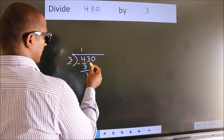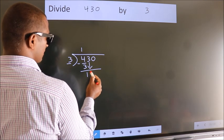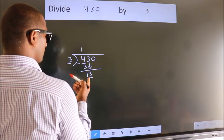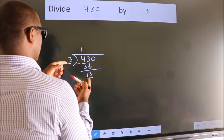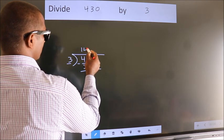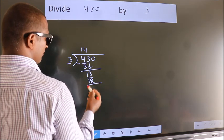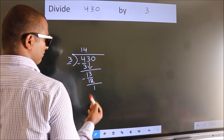After this, bring down the beside number. So, 3 down. So, 13. A number close to 13 in 3 table is 3 fours 12. Now, we subtract. We get 1.